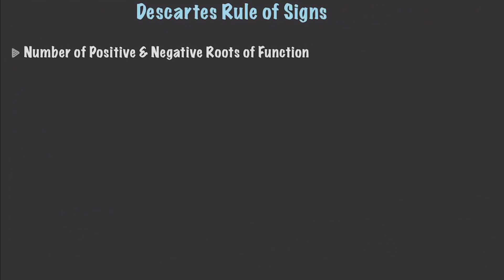Okay so both of these are best going to be explained through the use of an example, otherwise they sound kind of confusing. Descartes' rule of signs tells you the number of positive and negative roots of a function, which might be a little confusing. So let me just go through an example. Let's say we have a function which is x to the fourth plus x to the third minus 16x squared minus 4x plus 48, and we want to know how many different ways we can solve this equation and get a value of 0.